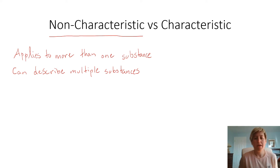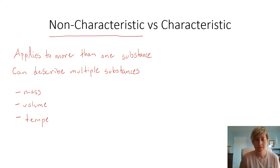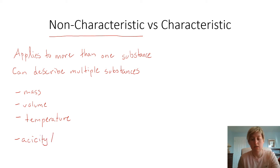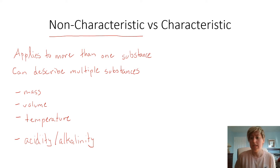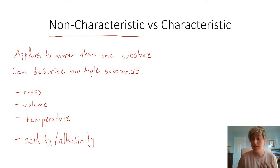Non-characteristic properties can describe multiple substances — things like mass, volume, temperature, and acidity and basicity, also described as alkalinity, meaning how much of an acid or base something is. Some people consider acidity and alkalinity a characteristic property; some consider it non-characteristic. For this video, we're going to consider it non-characteristic because you can have many substances with the same pH value, and we'll talk about that a bit later.